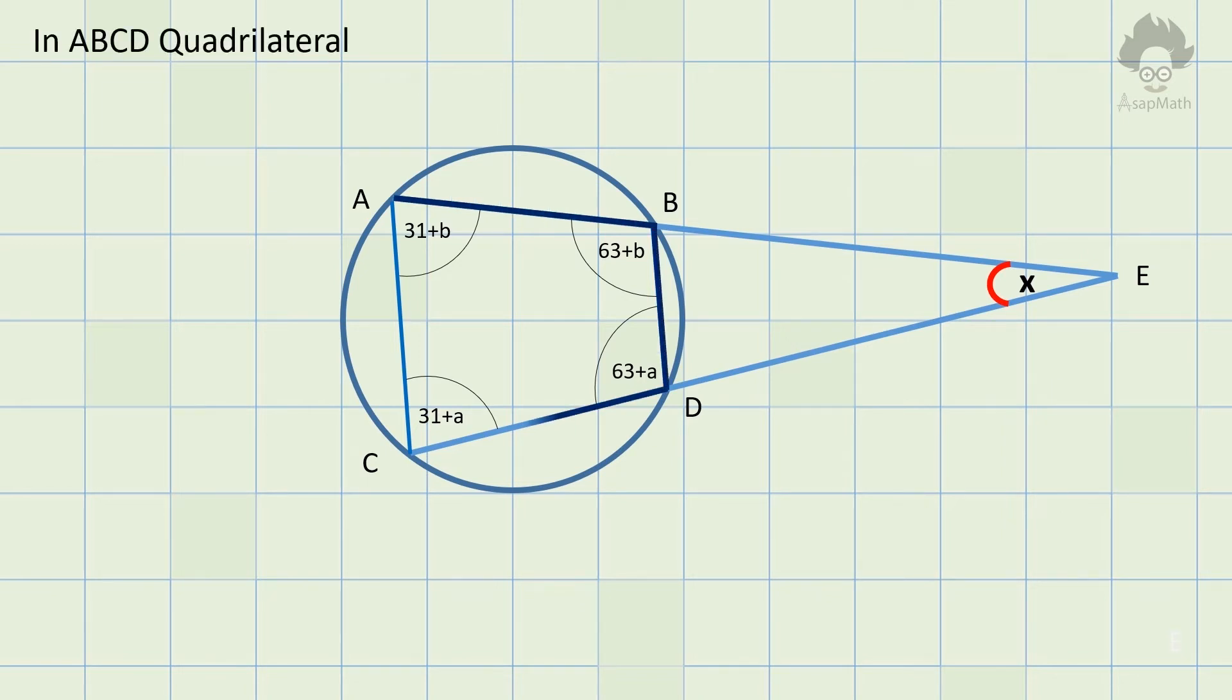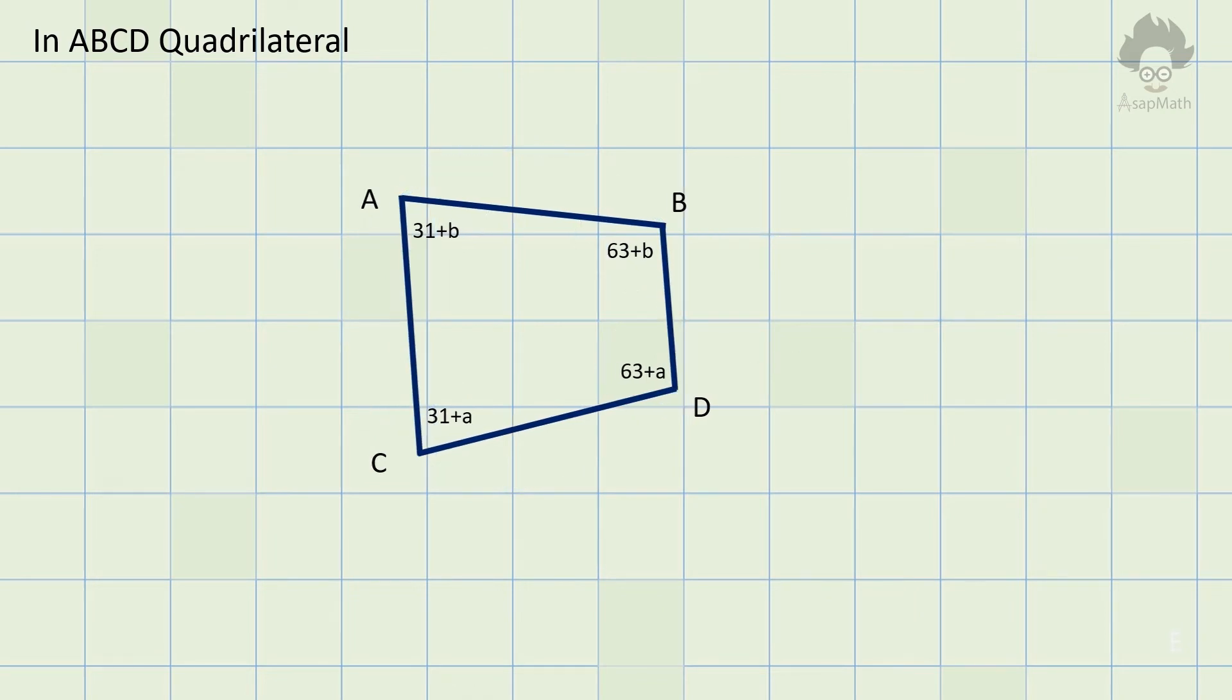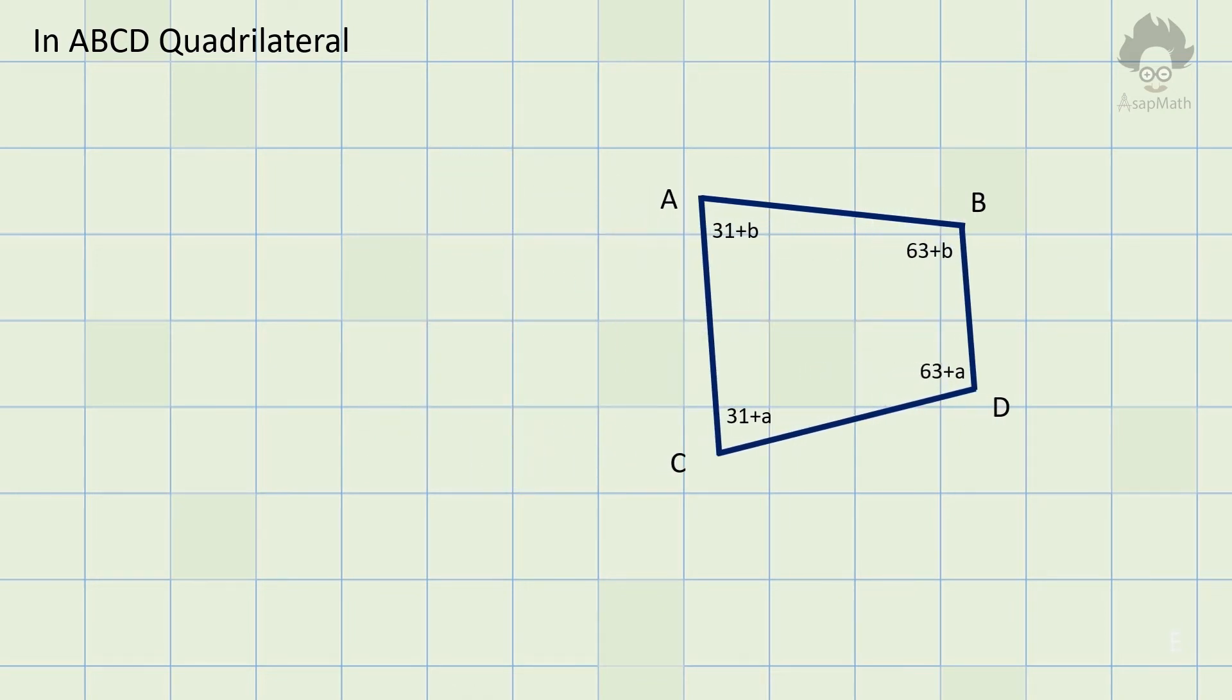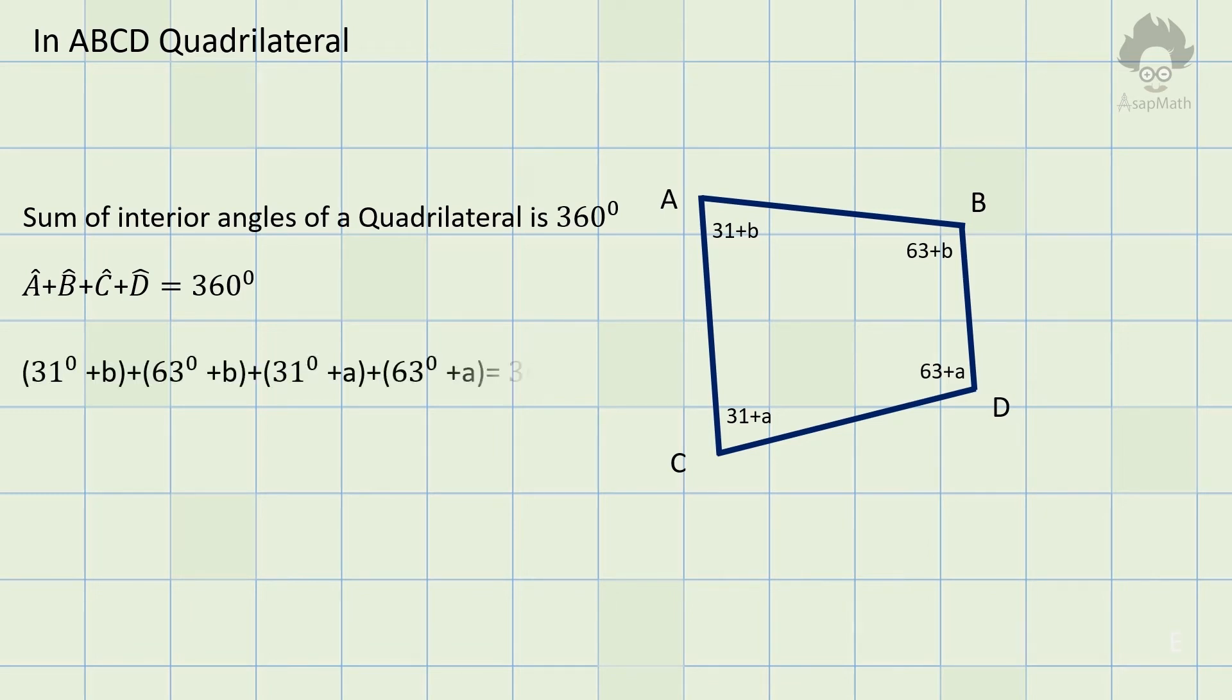Next step is to derive an expression in terms of A and B. Sum of interior angles of quadrilateral is 360 degrees. So, sum of angles A, B, C and D is equal to 360 degrees. After writing the expression, we can simplify it and write an expression for A and B. A plus B is equal to 86 degrees.